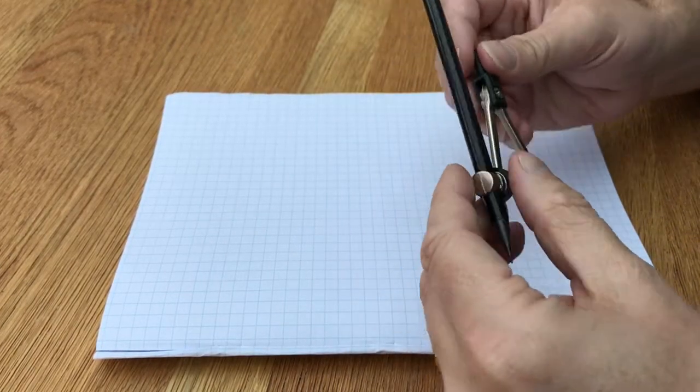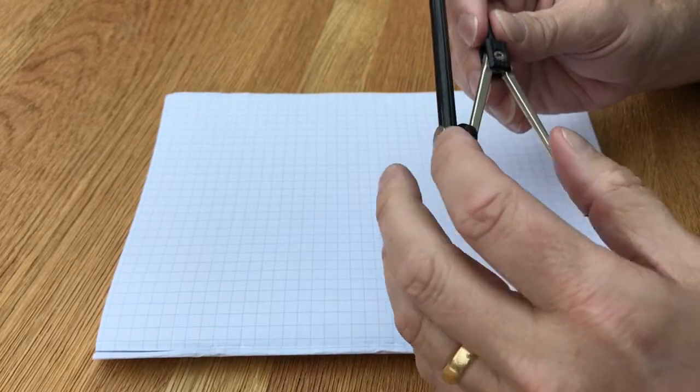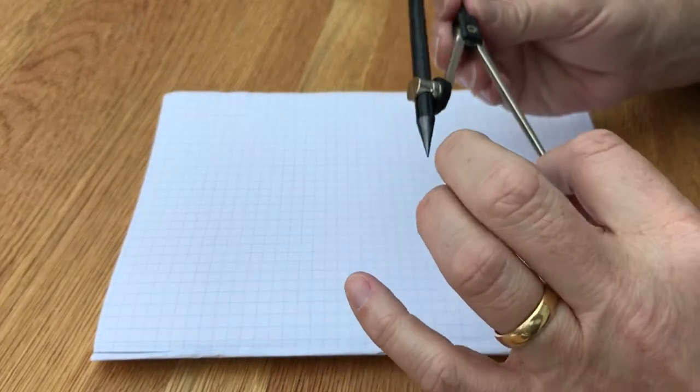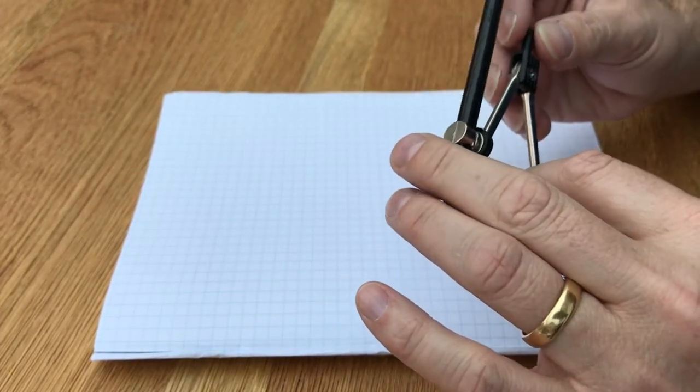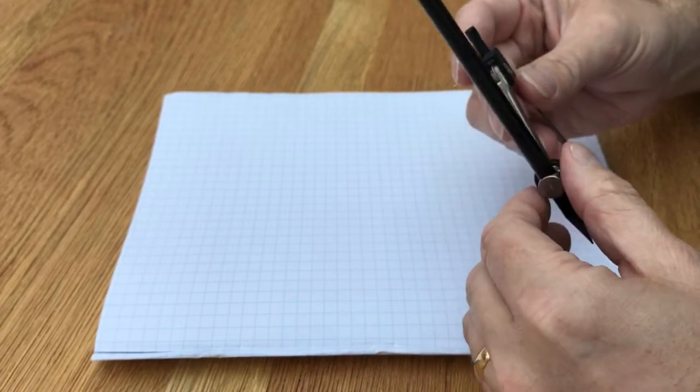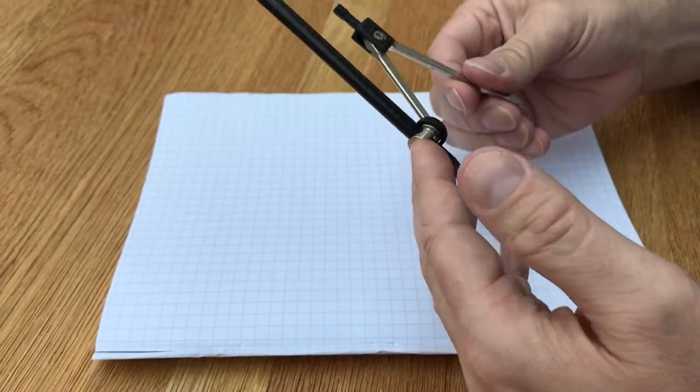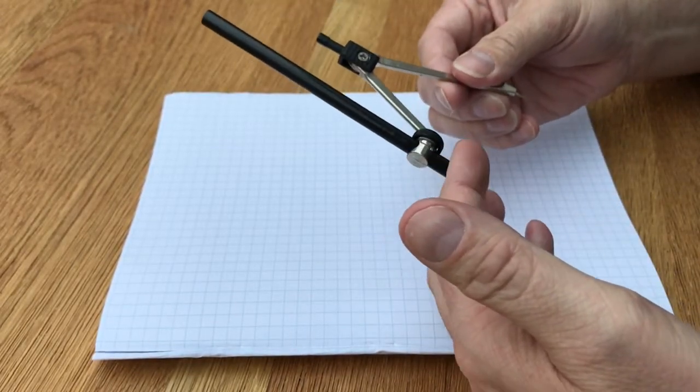Hello, today we're going to be working on circles. We're going to be learning to draw circles carefully and we're going to make some patterns using circles. What we're going to use is a pair of compasses to draw our circles to make sure they're very accurate.